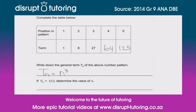We are told that tn is equal to 512 — what would the value of n be? If tn is 512, then 512 = n³. To get rid of this cube we do the inverse, which is to cube root both sides. The cube root of 512 is 8, so therefore n is equal to 8. Let's check: 8 cubed gives me 512. So the eighth term in the sequence is equal to 512.